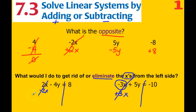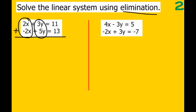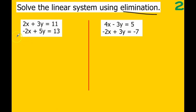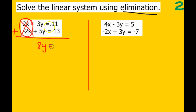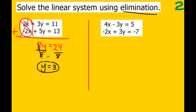In order for something to eliminate, they have to be opposites — one positive and one negative. Looking at our x's, 2 plus negative 2 is 0, so those eliminate. Then 3y plus 5y gives me 8y, equals 11 plus 13, which gives us 24. We now have one new equation we can solve for y. Divide by 8, and 24 divided by 8 is 3, so y equals 3.